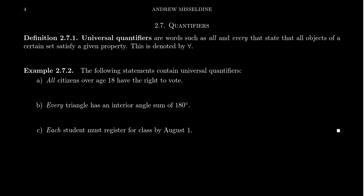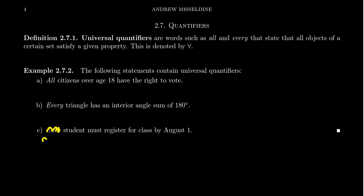Let's look at some statements with the universal quantifier. Statement A: all citizens over the age of 18 have the right to vote. Statement B: every triangle has an interior angle sum of 180 degrees. Statement C: each student must register for class by August 1st. Notice that 'all,' 'every,' and 'each' are synonyms all used to describe the universal quantifier — and the meaning changes significantly if you replace them with 'some.'